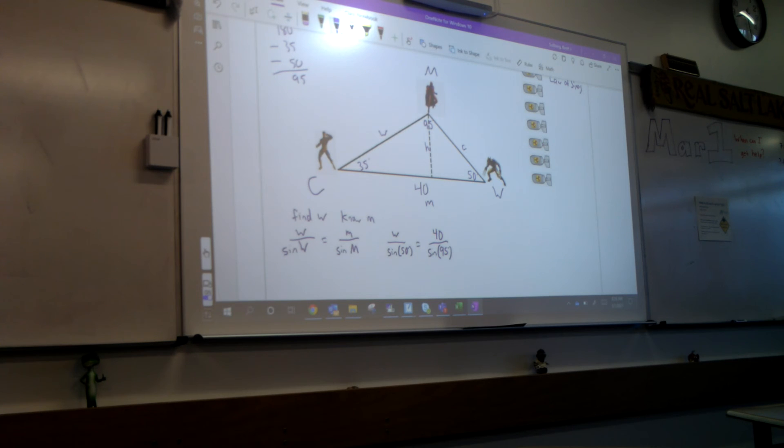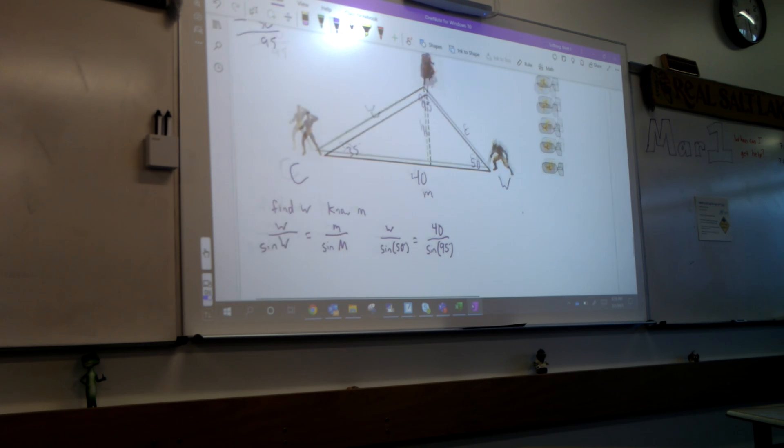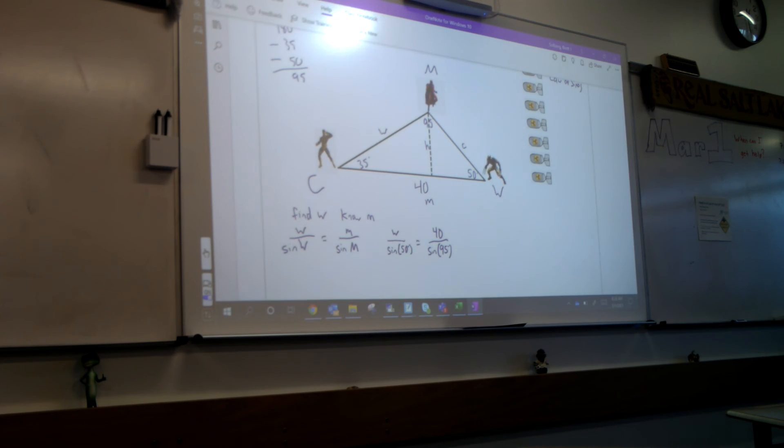And then we're going to fill that in. So we don't know the distance W, which is from Cyclops to Magneto. But we do know the angle W is 50 degrees. And then M is the distance between Cyclops and Wolverine, that's 40. And the angle of M is 95 degrees. Okay, do you guys agree with how I've got this set up? If I'm going to solve for W, what do I just need to do now? Times the sine of 50 on both sides. So will you guys go and on your calculator do 40 times the sine of 50 over the sine of 95?